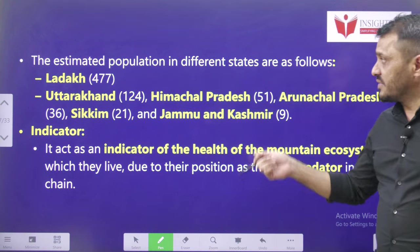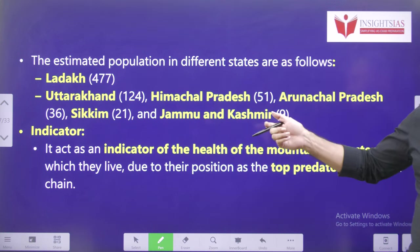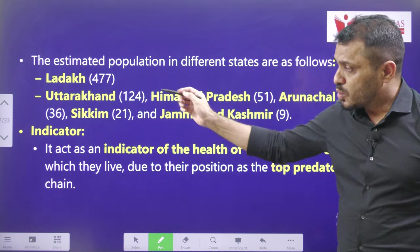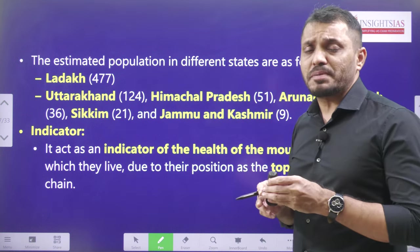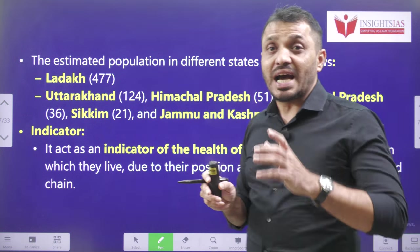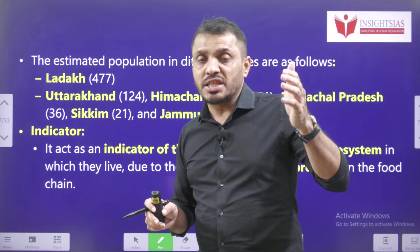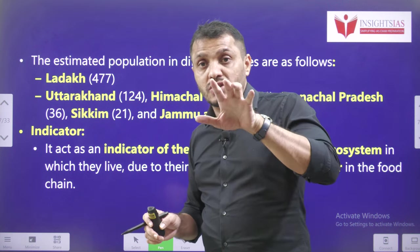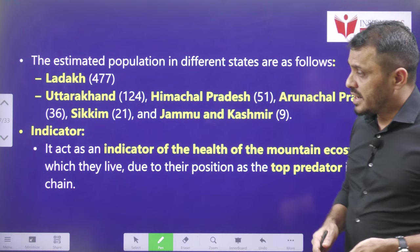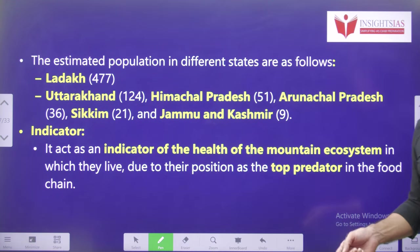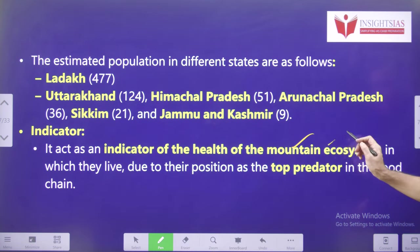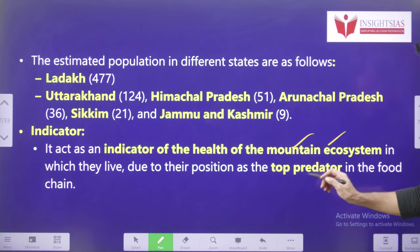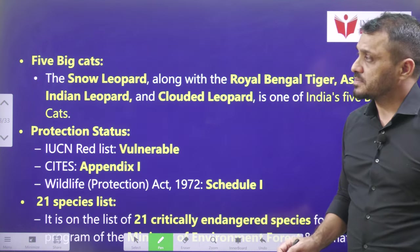Estimated population in different states in India: highest number of snow leopards are present in Ladakh and Uttarakhand, because snow leopards generally live in high altitudes, especially in the eastern and northern Himalayas. They are the indicator of the health of the mountain ecosystem because they are the top predators in the food chain.